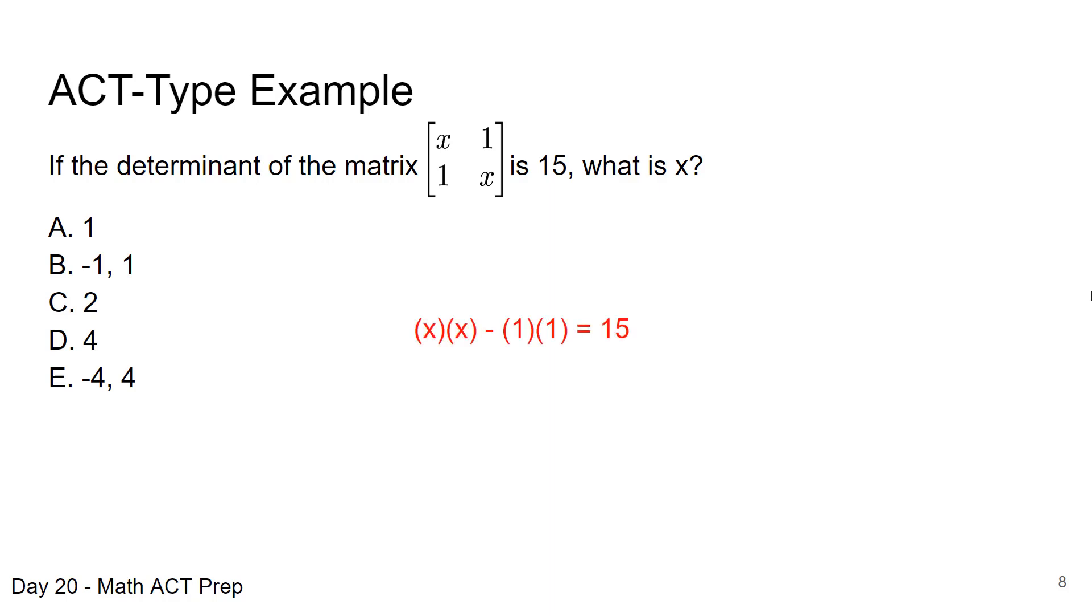What we just went over, we can take the diagonals, multiply those. So X times X minus 1 times 1. And we set that equal to 15 because in this case they gave us the value of the determinant. So we're solving for X. We're going to multiply and get X squared minus 1 equals 15. We'll add 1 to both sides and we get X squared equals 16. When we take the square root of both sides, we'll get X could be equal to negative 4 or positive 4. And we have to take both cases of plus or minus when we take the square root. So X can be negative 4 or positive 4. And that is answer choice E.